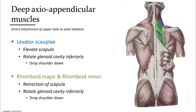Underneath the trapezius are the levator scapulae and rhomboid muscles. The levator scapulae lifts the upper medial border of the scapula, meaning that if the medial side is lifted, then like a teeter-totter, the lateral side where your shoulder socket is will drop down. There are two rhomboid muscles, major and minor, but we'll consider them together. Their role is retraction of the scapula as you pull your shoulder blades together.